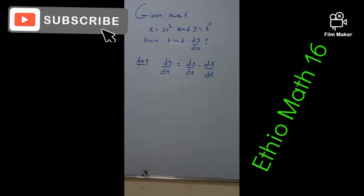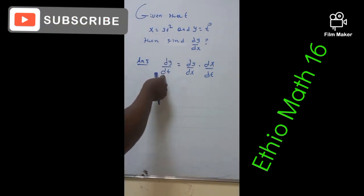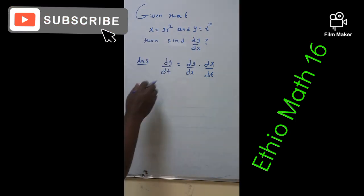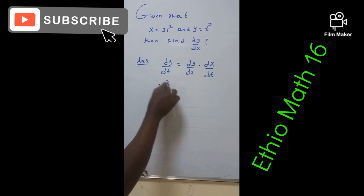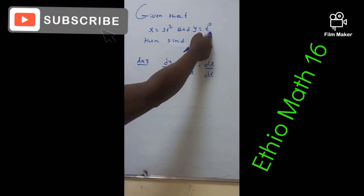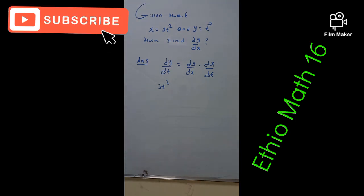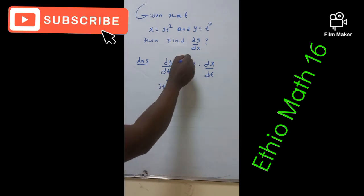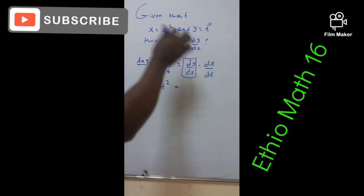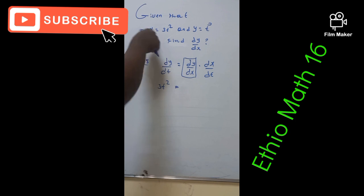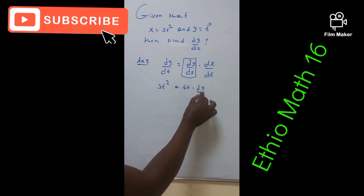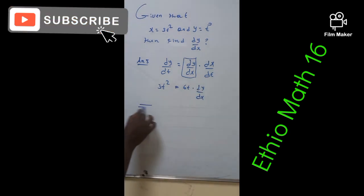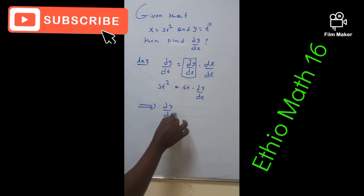This is the formal definition of this problem. The derivative of dy by dt with respect to time — you can find the derivative of y with respect to t, which is going to be 3t squared. This is given by dy by dx. Then dx by dt, the derivative of x with respect to t, is going to be 6t.